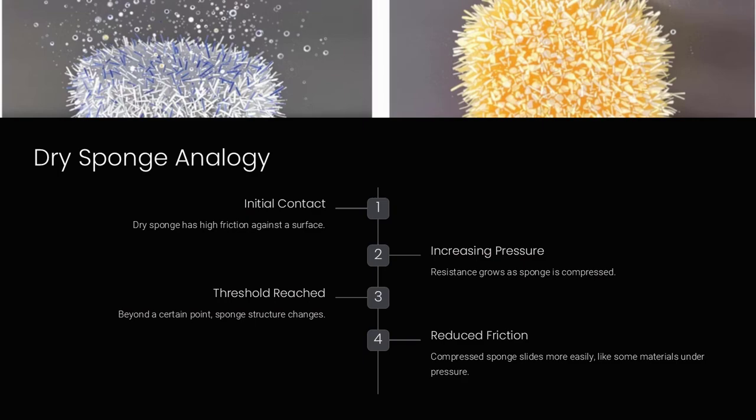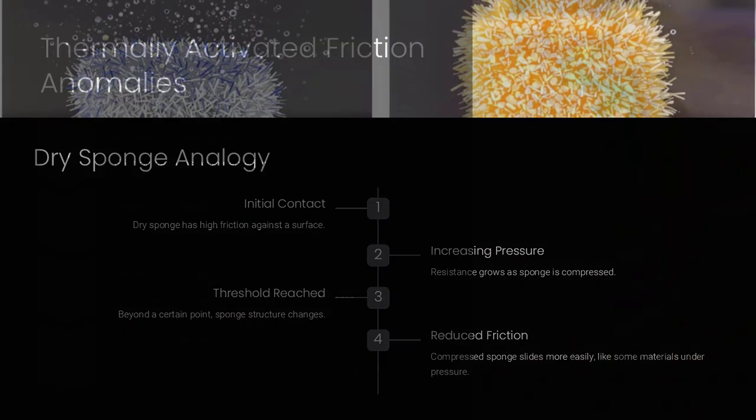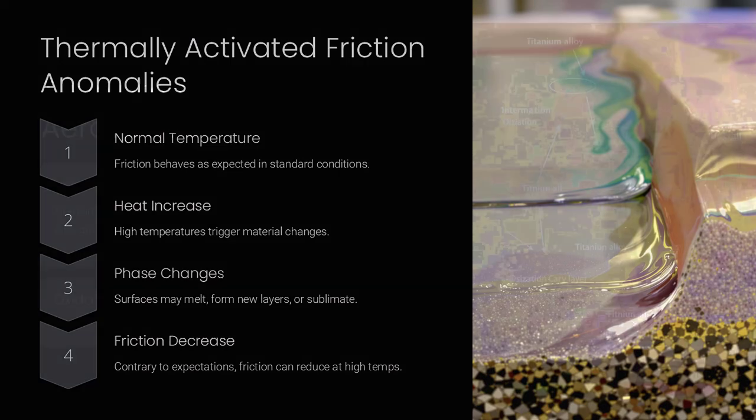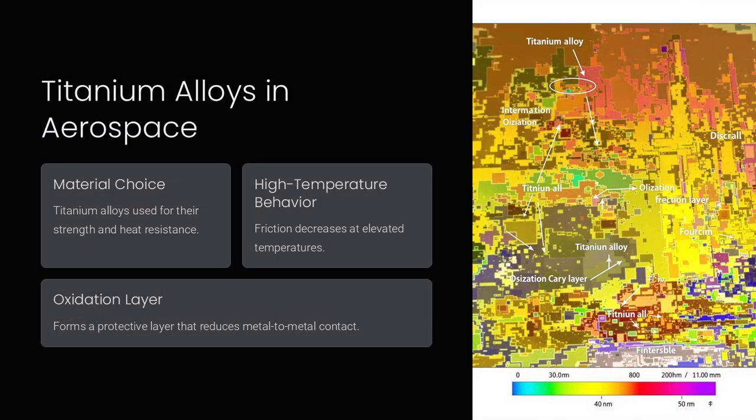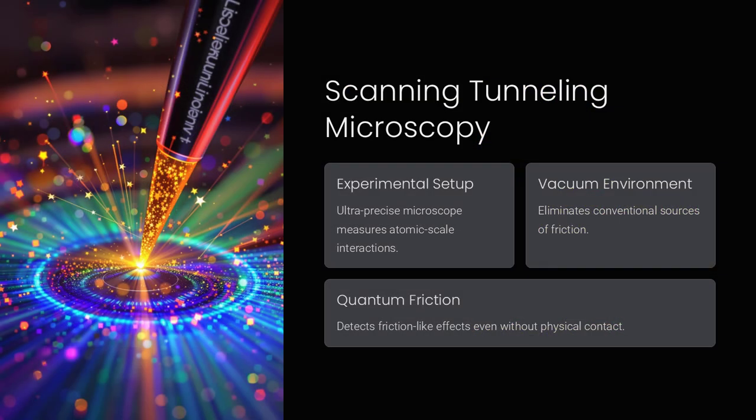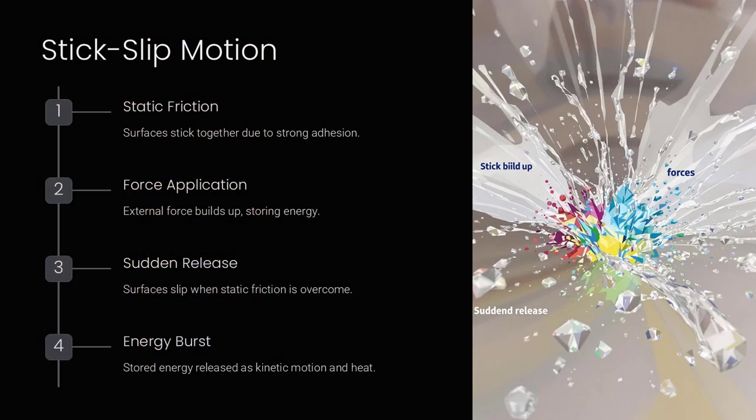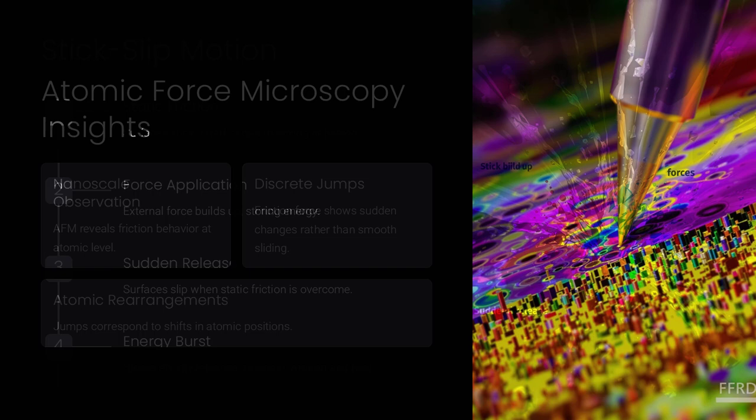Conversely, under extreme pressures, certain materials experience frictional strengthening, where friction increases disproportionately instead of staying constant. This can be seen in earthquake mechanics where underground rock layers lock together with enormous friction before suddenly slipping, releasing massive energy.